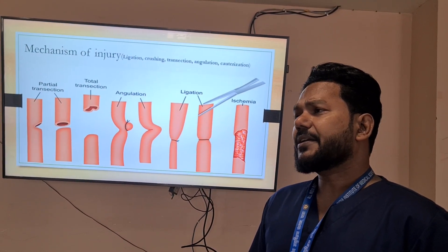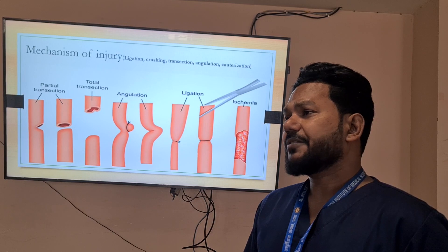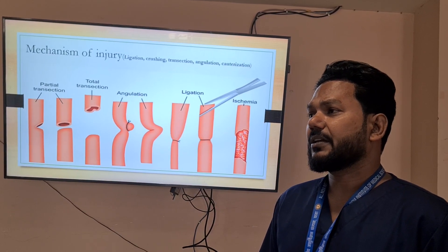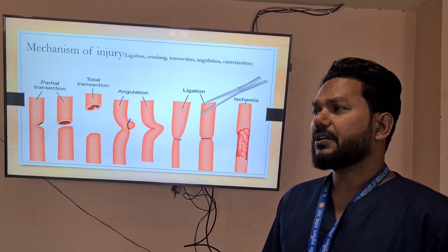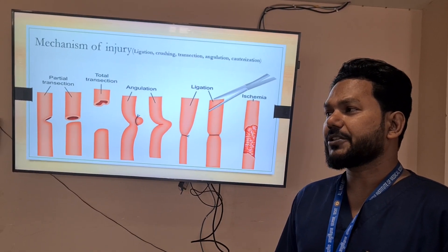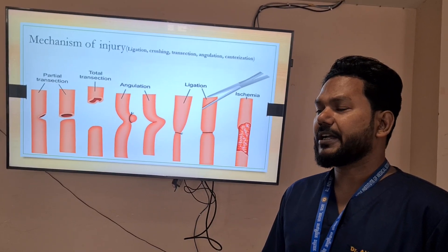The ureter may be damaged by different mechanisms of injury, including ligation, crushing, transection, angulation, and cauterization.